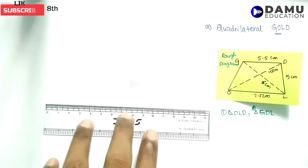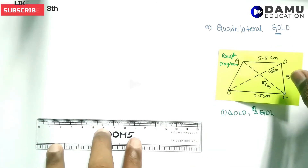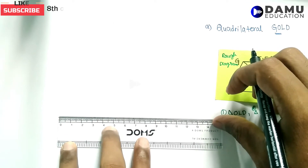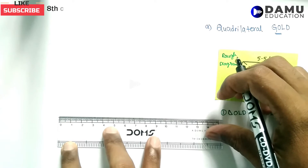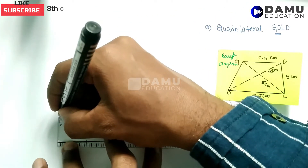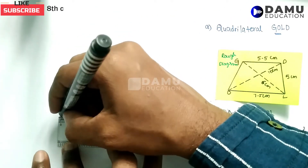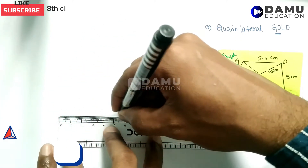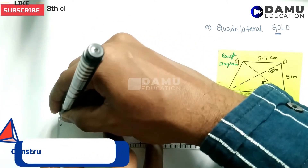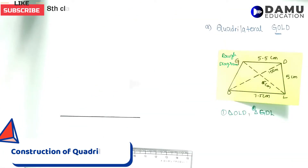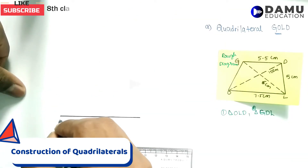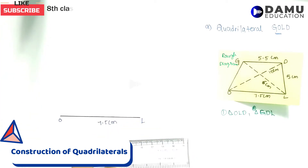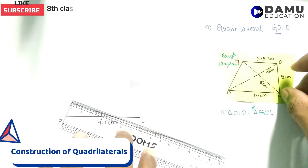First, draw 7.5 cm. Keep your scale horizontally, then mark 7.5 cm from O. So we need to draw from 0 up to the 7.5 cm mark. This line OL is 7.5 cm.